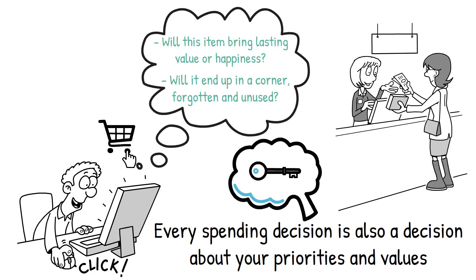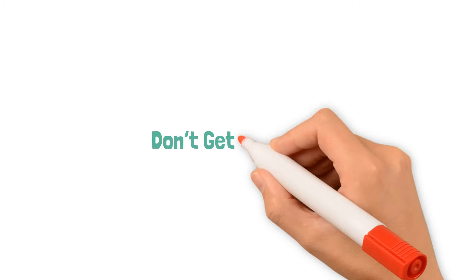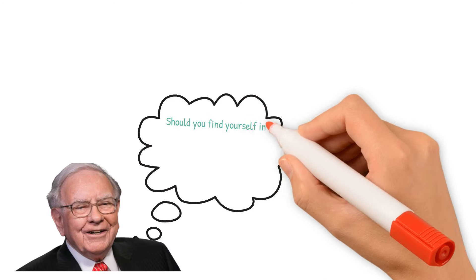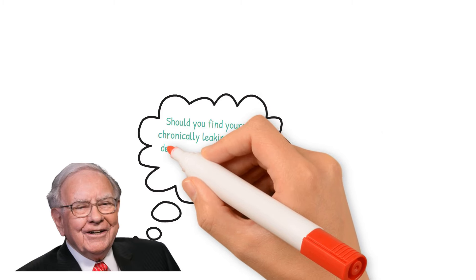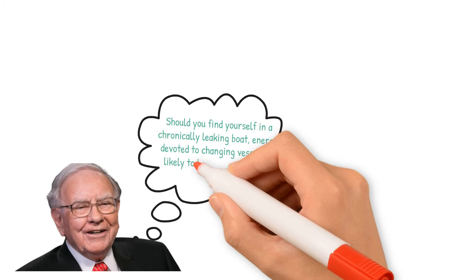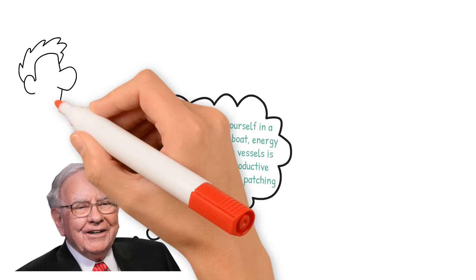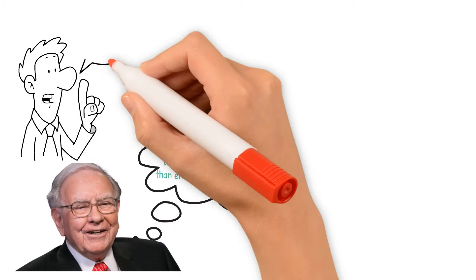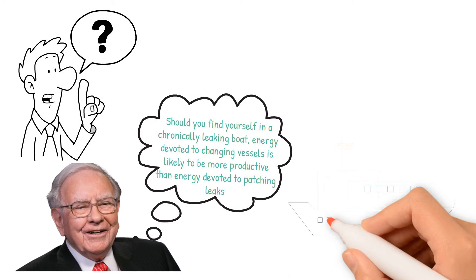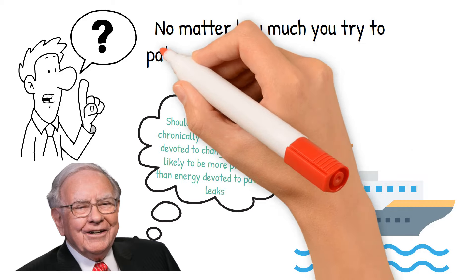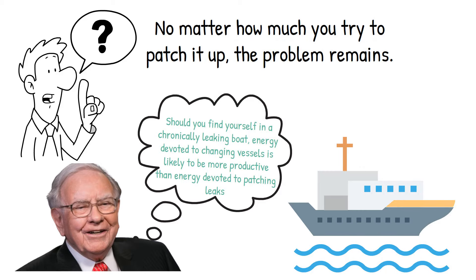Moving on to next crucial piece of advice for frugal living. Don't get into debt. Buffett uses a powerful analogy. Should you find yourself in a chronically leaking boat, energy devoted to changing vessels is likely to be more productive than energy devoted to patching leaks. What does this mean in terms of managing our money? Imagine debt as a boat that's constantly leaking. No matter how much you try to patch it up, the problem remains. The real solution? Get into a better boat, one that's not leaking.